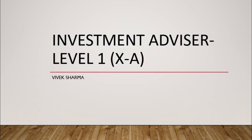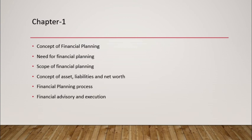This video is focused on Chapter 1 of this module, which is Level 1. Chapter 1 deals with six broad areas: first, what is financial planning; second, the need for financial planning; third, the scope of financial planning; fourth, the concept of assets, liabilities, and net worth; and finally, the financial planning process — advisory and execution. These are the six learning objectives of Chapter 1.